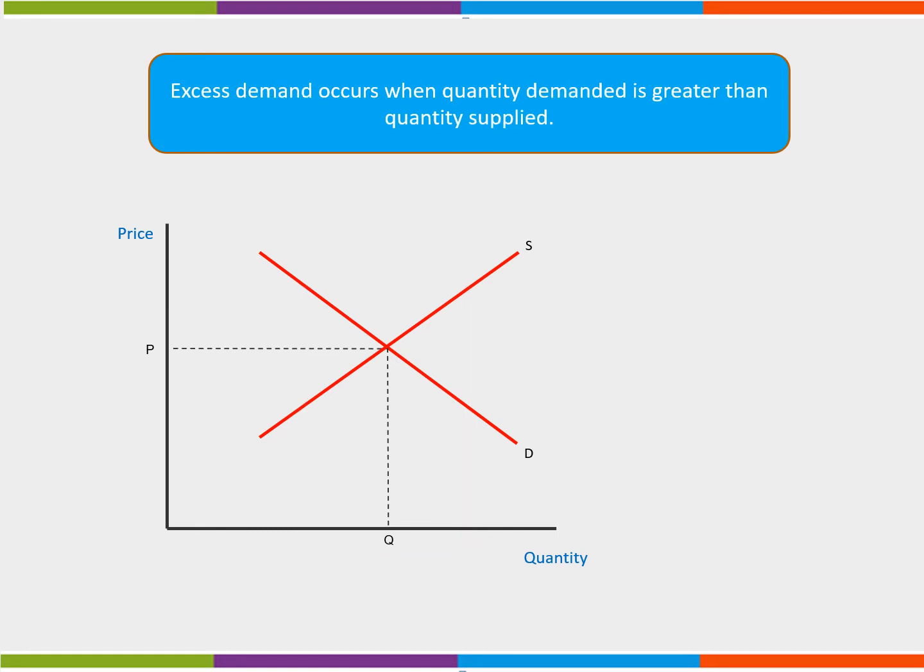Excess demand occurs when quantity demanded is greater than quantity supplied. If price were to fall to P2, we would have a position of excess demand.